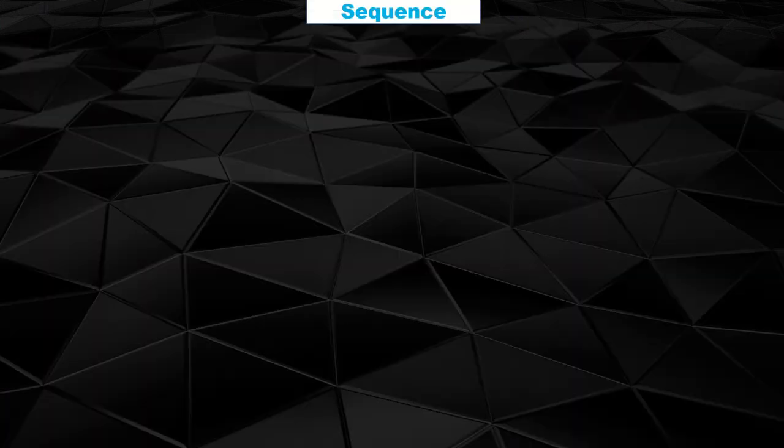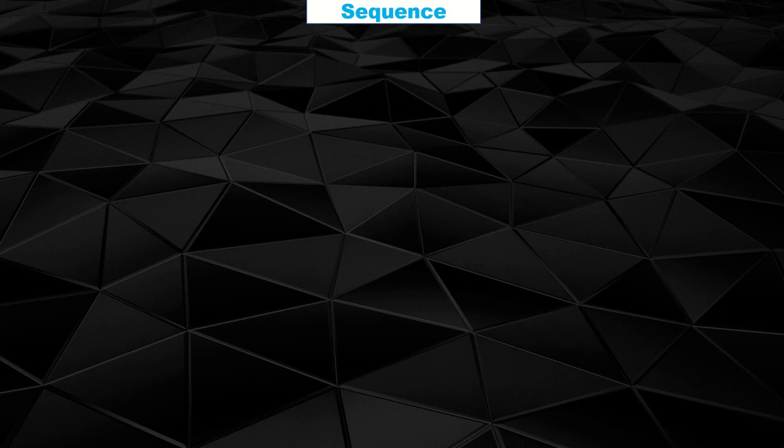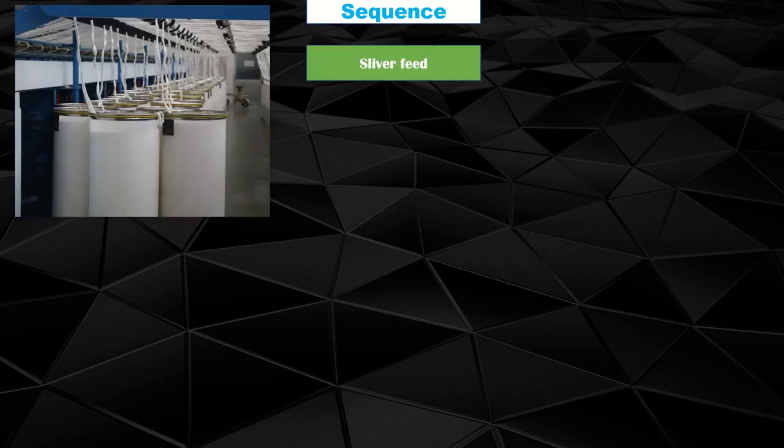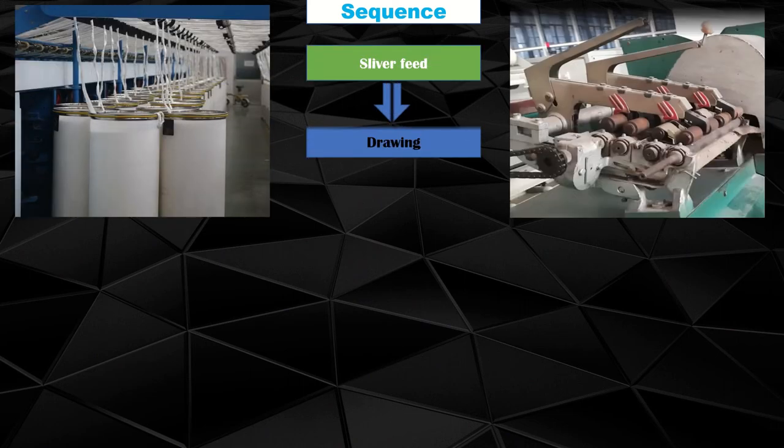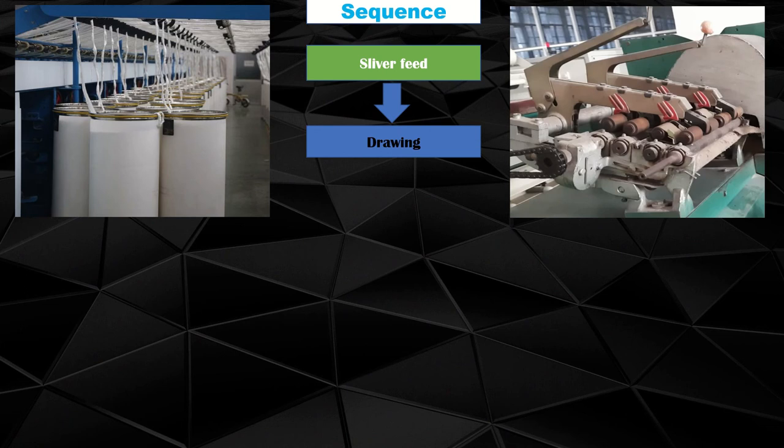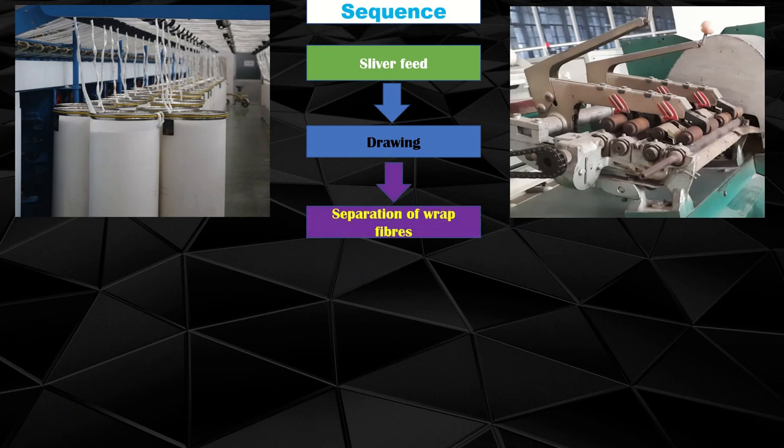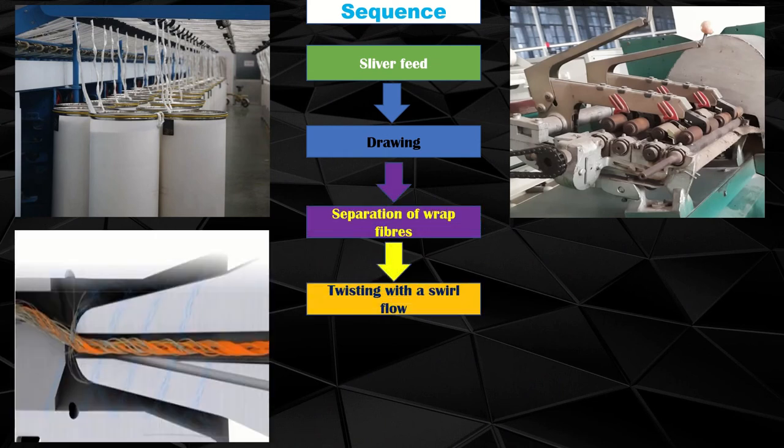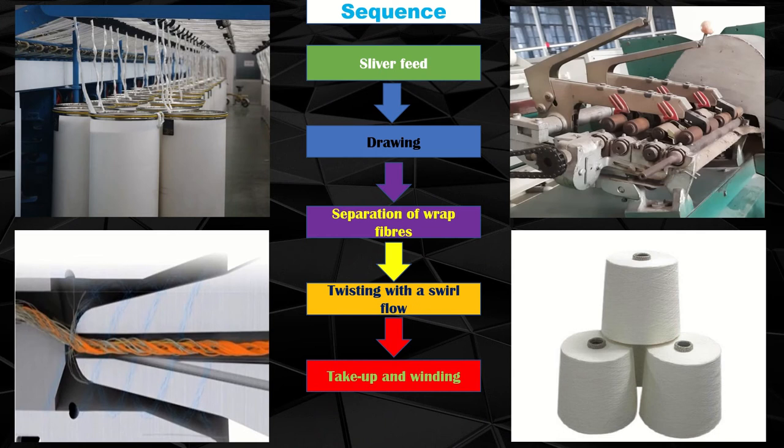The sequence of air jet spinning includes sliver feeding, which is the feeding zone, then drawing or drafting zone with 4-over-4 drafting rollers normally used for air jet spinning systems, then separation of wrapper fibers, twisting zone including twisting with swirl flow, and lastly take-up or winding unit.